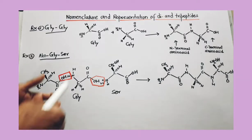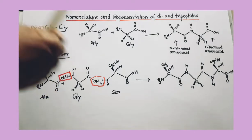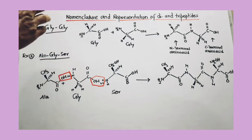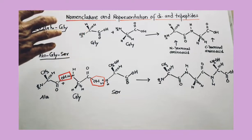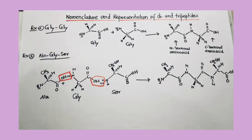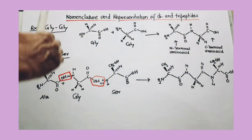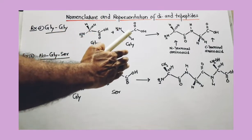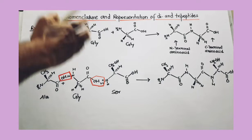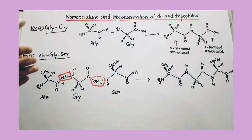In this video we cover the nomenclature and representation of di and tripeptides. Dipeptides are formed from two similar or different amino acids, and a dipeptide has only one peptide linkage. Tripeptides are formed from three amino acids and have two amide linkages, also called peptide linkages.